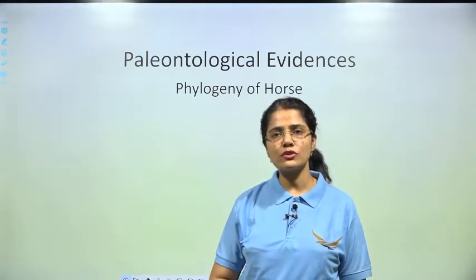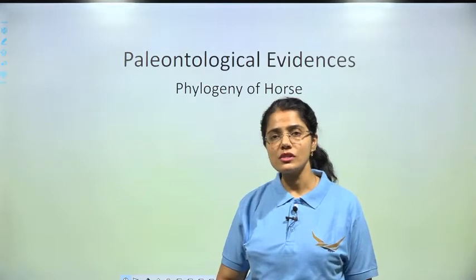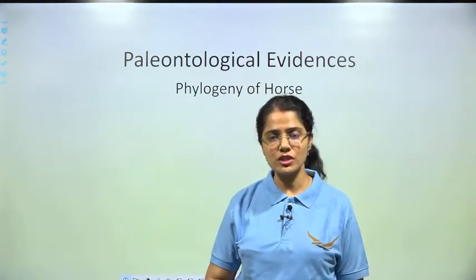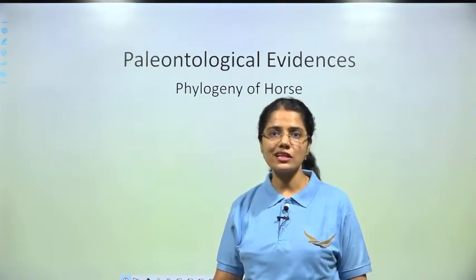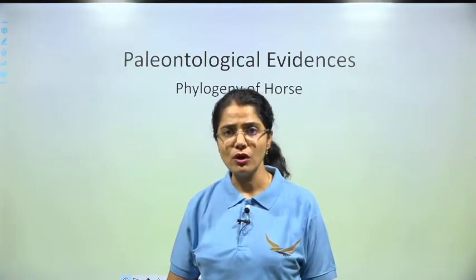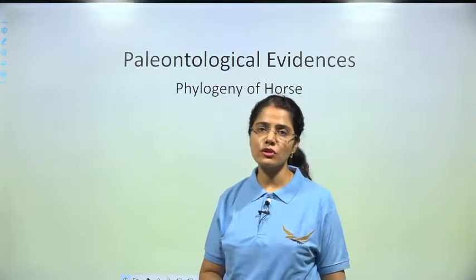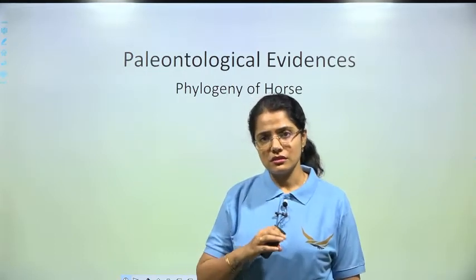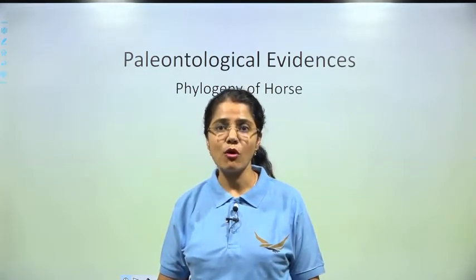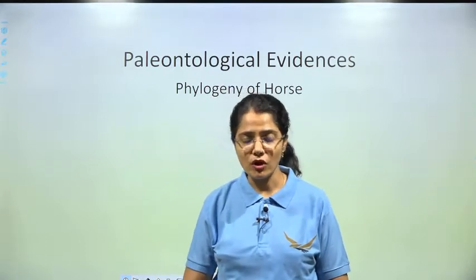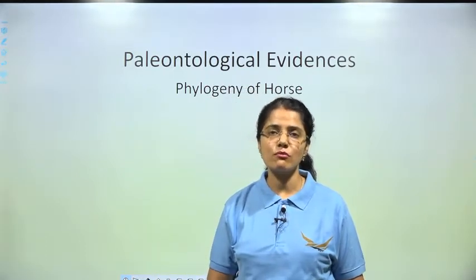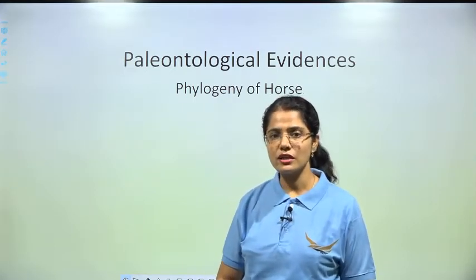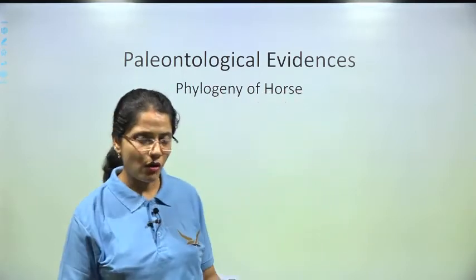Moving on, the last point we discussed was the phylogenetic lineage — that means phylogeny, which is the ancestral history. In this section we are going to talk about the phylogeny of horse, that is the ancestral history of the modern horse which exists nowadays.